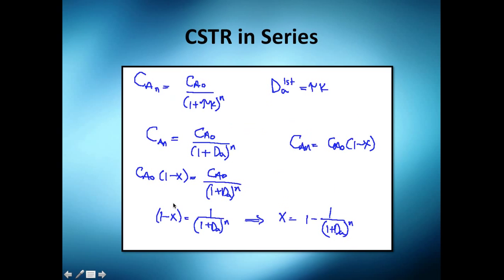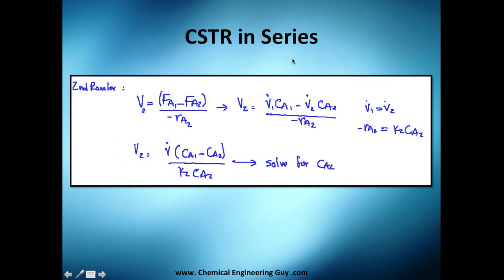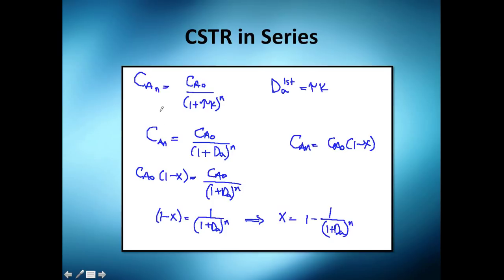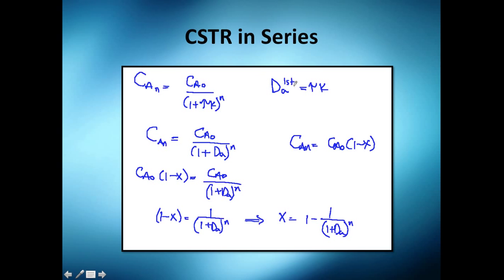Now we extend the analysis from two reactors to N reactors. We'll have an Nth power here. Remember, the Damköhler number is tau times k for a first-order reaction. We substitute it in. The initial concentration is a constant; tau and k are the same across all reactors, so we use the same value. We substitute the Damköhler number into our expression.